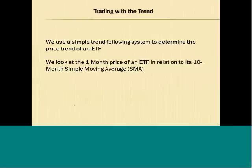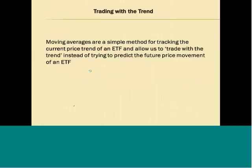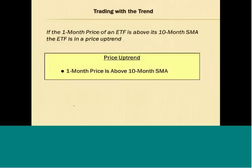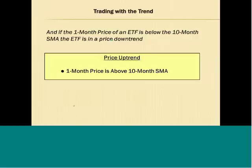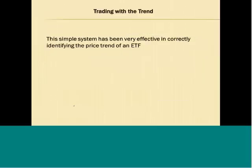We make sure the one-month price of the ETF is above the 10-month simple moving average. Moving averages are a simple method for tracking the current price trend of an ETF, allowing us to trade with the trend instead of trying to predict future price movement. If the one-month price is above the 10-month simple moving average, the ETF is in a price uptrend. If it's below, the ETF is in a price downtrend. This simple system has been very effective in identifying the price trend.